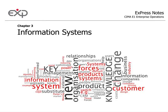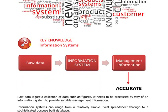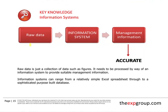Hello and welcome to this training video for CIMA E1 Enterprise Operation. We're on Chapter 3 of the Express Notes and this is all about information systems. Let's have a quick look at what we mean by information systems. In very simple terms, an information system is something which converts raw data into management information.